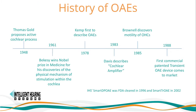The OAE historical timeline begins in 1948 when Thomas Gold proposes an active cochlear process. In 1961, Bekesy wins the Nobel Prize in Medicine for his discovery of the physical mechanism of stimulation within the cochlea. In 1978, Kemp is first to describe OAEs. In 1983, Davis describes the cochlear amplifier, meaning the cochlea acts as an active biological process that enhances low-intensity sounds. The cochlea is passive above 60 dB, which explains recruitment and OAEs.